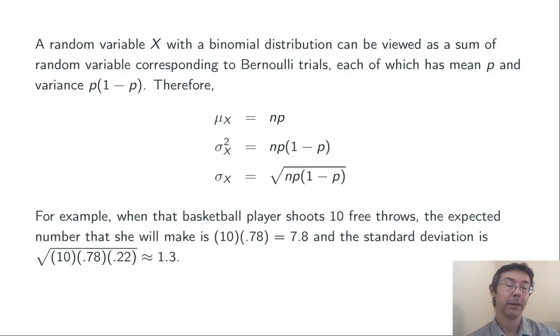Looking at that basketball player again, who's shooting 10 shots with probability of success 0.78 each time, we get an expected value of 7.8 and a standard deviation of 1.3.